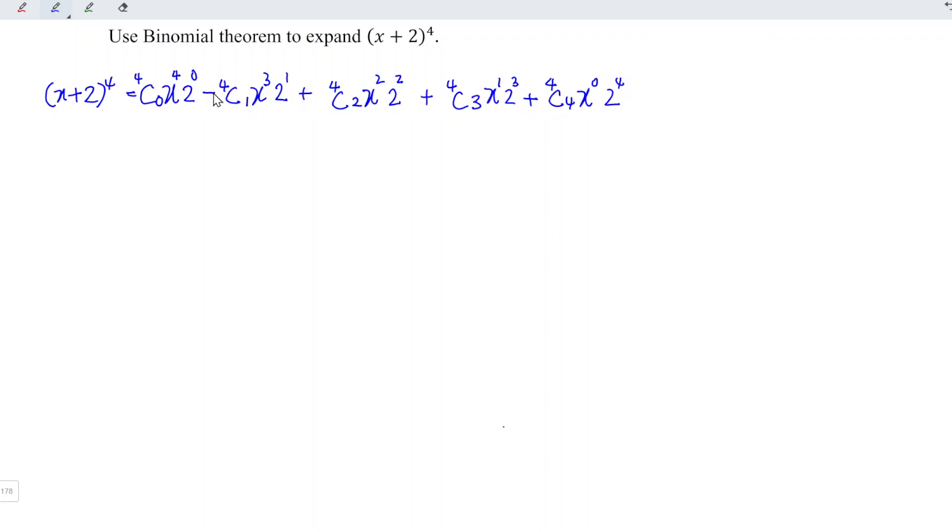So what we have to do next is just evaluate the values. We can evaluate the values manually. Recall nCr is equal to n factorial divided by r factorial times n minus r factorial.